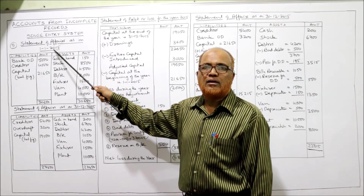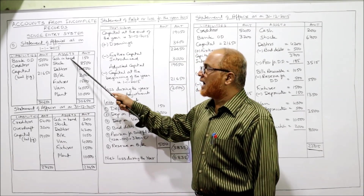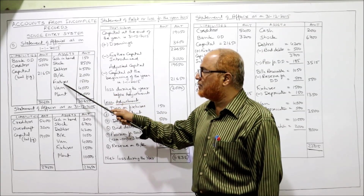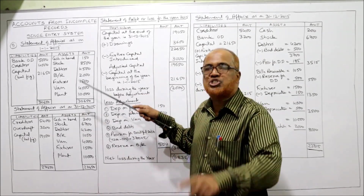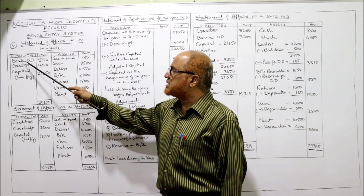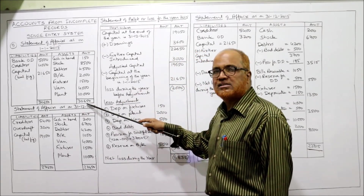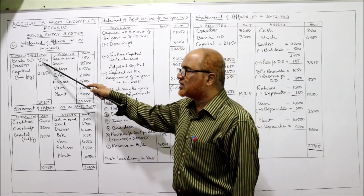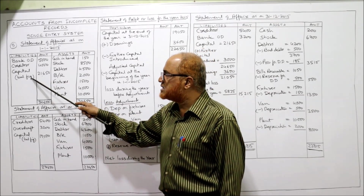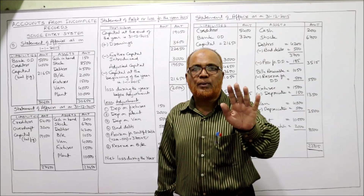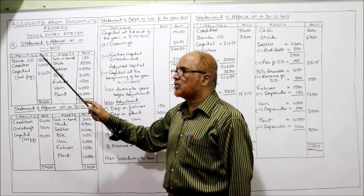Statement of affairs as on 1st January 2015 — beginning of the year. Assets are: cash in hand, stock, debtors, bills receivable, fixtures, van, and plant. Liabilities are bank overdraft and sundry creditors — only two liabilities. Total of assets is 30,650. Deduct 5,000 and 4,000, giving a balancing figure of 21,650, which is the opening capital. Capital is not given in the problem; by making this statement we find the opening capital is 21,650.